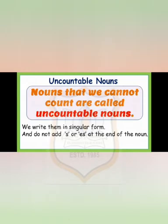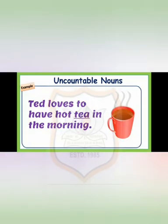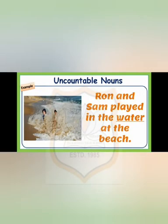This is uncountable nouns. Nouns that we cannot count are called uncountable nouns. We write them in singular form and do not add S or ES at the end of the noun. For example, Ted loves to have hot tea in the morning. Ron and Sam played in the water at the beach.